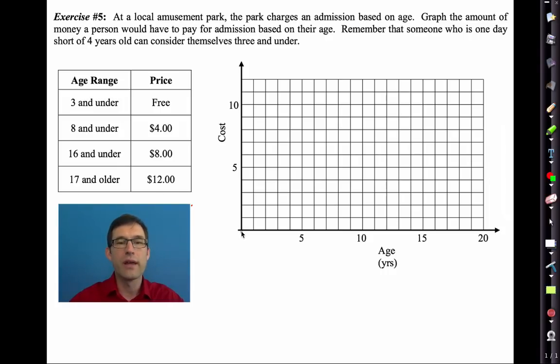So three and under it's free. So obviously if you're zero the cost is nothing. If you're one the cost is nothing. If you're two the cost is nothing. If you're three the cost is nothing. Now if you're four you're going to start getting charged. But remember even if you're right in here you still can consider yourself three. So everywhere all the way up to four it's free.